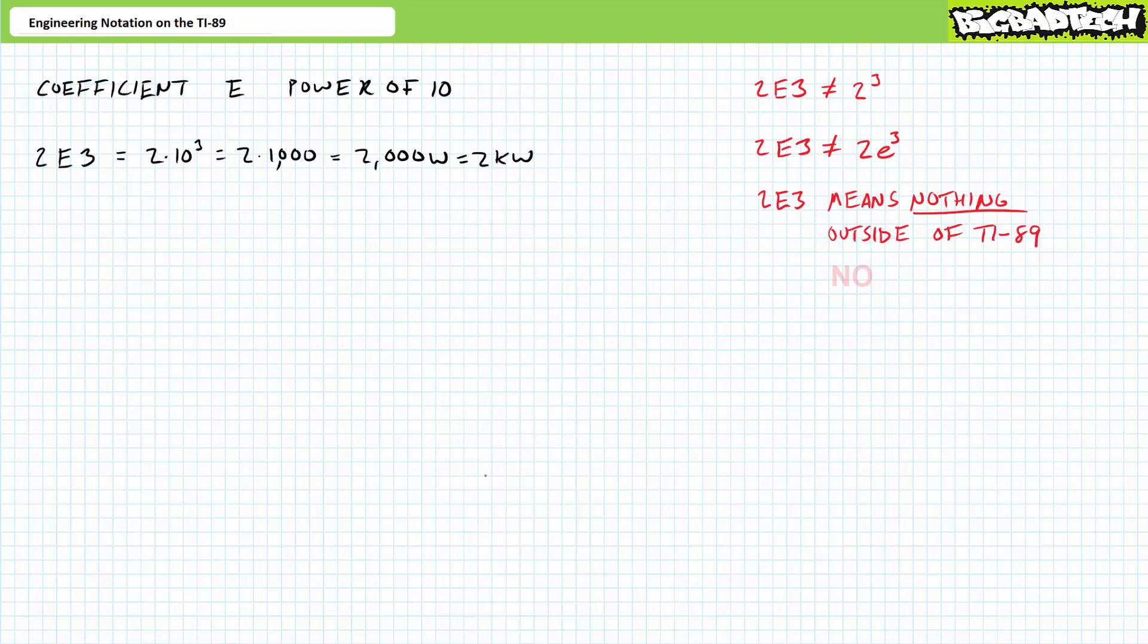Finally, 2E3 means absolutely nothing to the outside world. Only in TI-89 calculator land does this mean anything. If 2E3 represented a quantity of power in units of watts, and you were to enter 2E3 on an exam, you'd get the answer to that question wrong. 2E3 means nothing. It's just a method your calculator uses to display numbers in engineering format. Again, 2E3 means 2 times 10 to the third, or 2 times 1,000, or 2,000 watts, or using engineering prefixes, 2 kilowatts. All three of these interpretations are wrong.